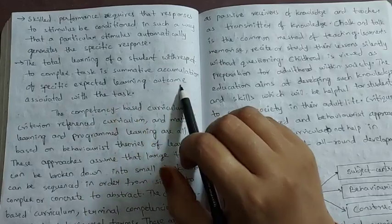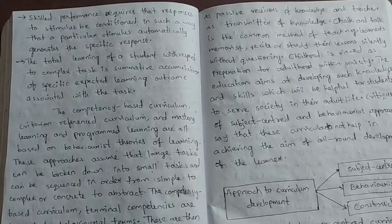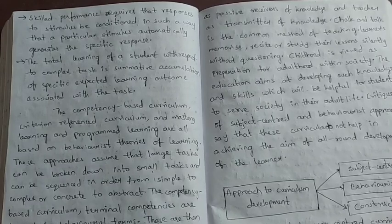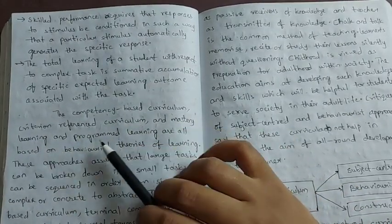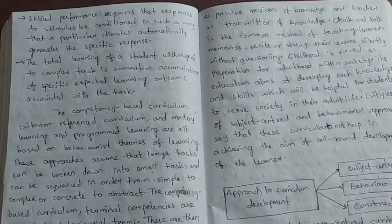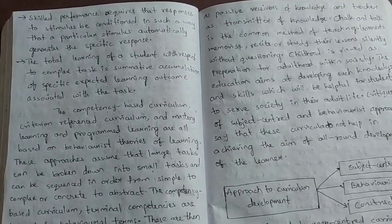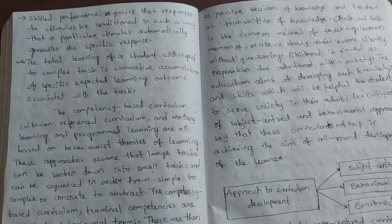The total learning of a student with respect to a complex task is the summative accumulation of specific expected learning outcomes associated with the task - what students have learned is reflected in their behavior and outcomes. Competency-based curriculum, criterion-referenced curriculum, mastery learning, and programmed learning are all based on behaviorist theories of learning.